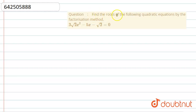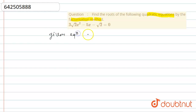Hello everyone. In this problem, find the root of the following quadratic equation. We have one given quadratic equation using the factorization method. The equation is 3√2·x² minus 5x minus √2 equal to 0.